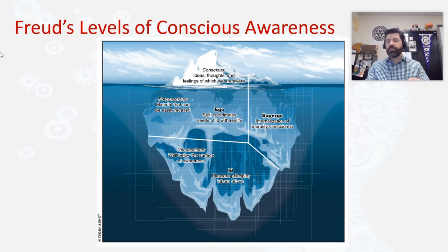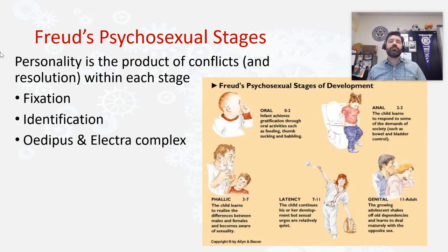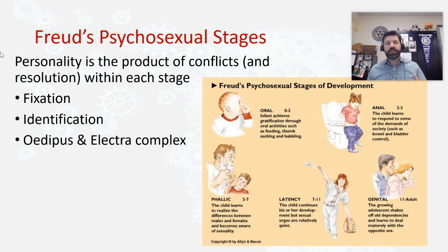Now let's talk about one of the most controversial elements of Freud's theories: his take on development. We've discussed development from perspectives like Piaget, Erikson, Kohlberg, and Marcia. Freud has his own five stages of what he calls psychosexual development, which impact our personality. He claims our personality is a product of the conflicts and resolutions that take place within these five stages. With each stage, Freud was looking at what is the big obstacle or milestone taking place.